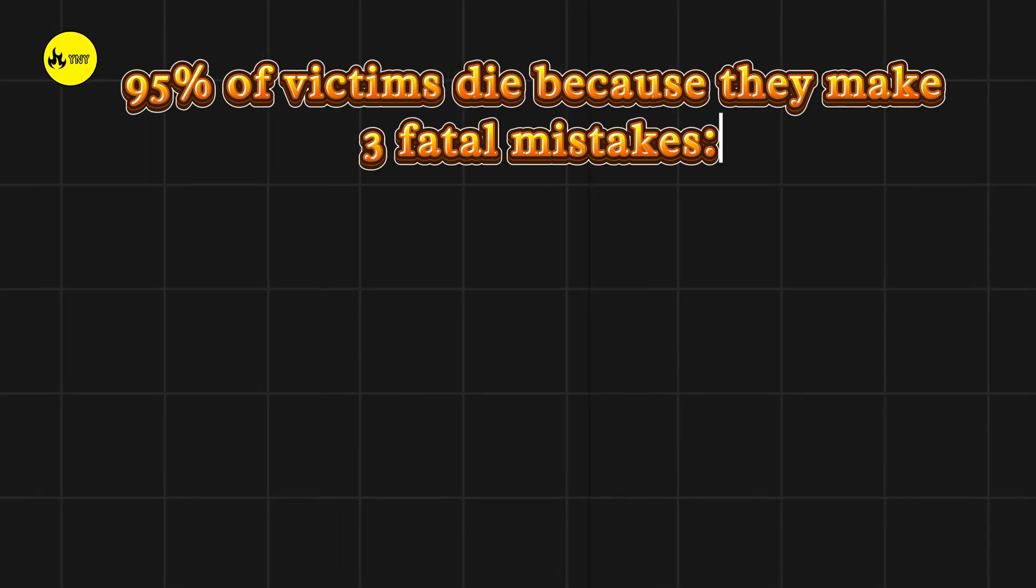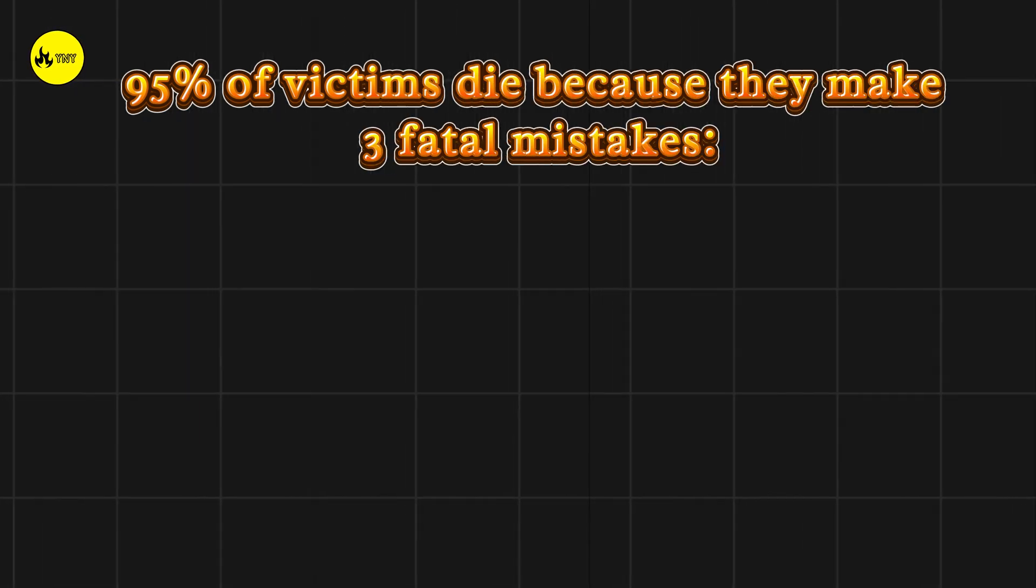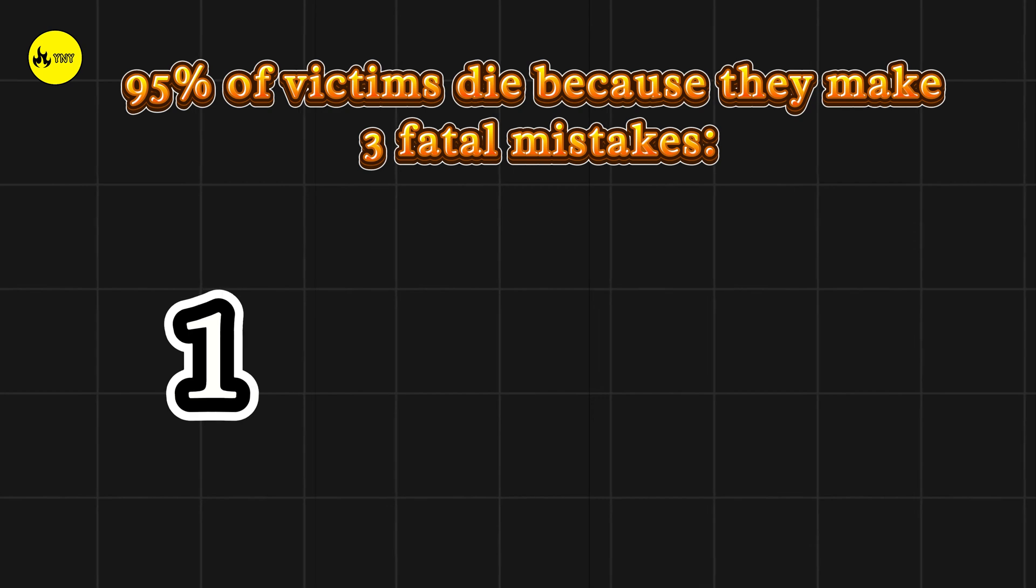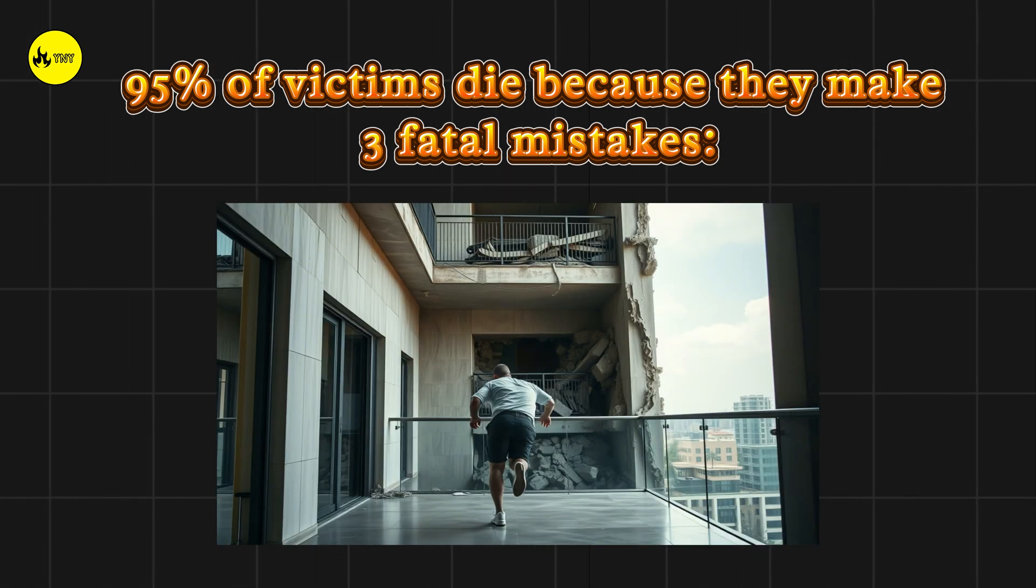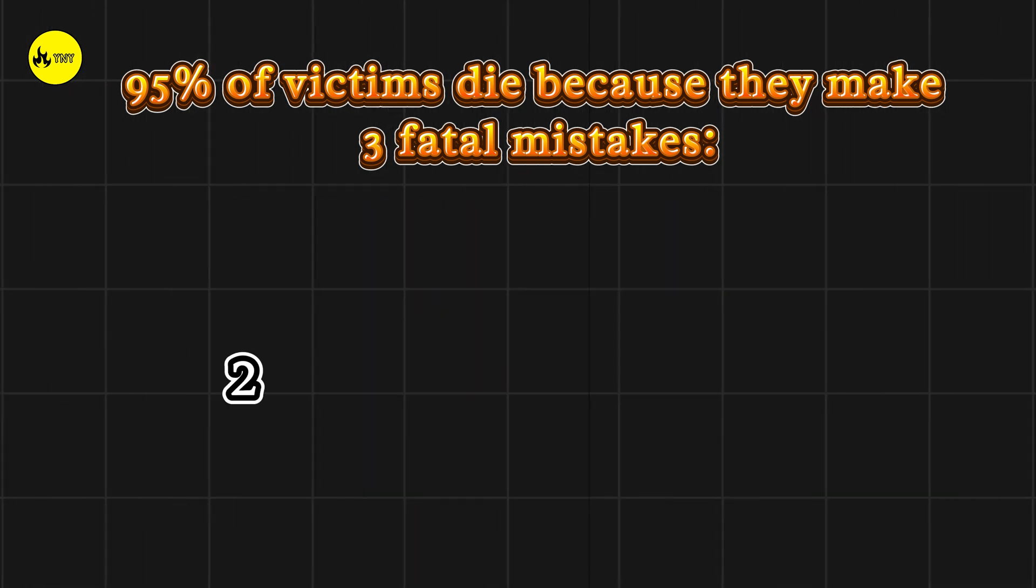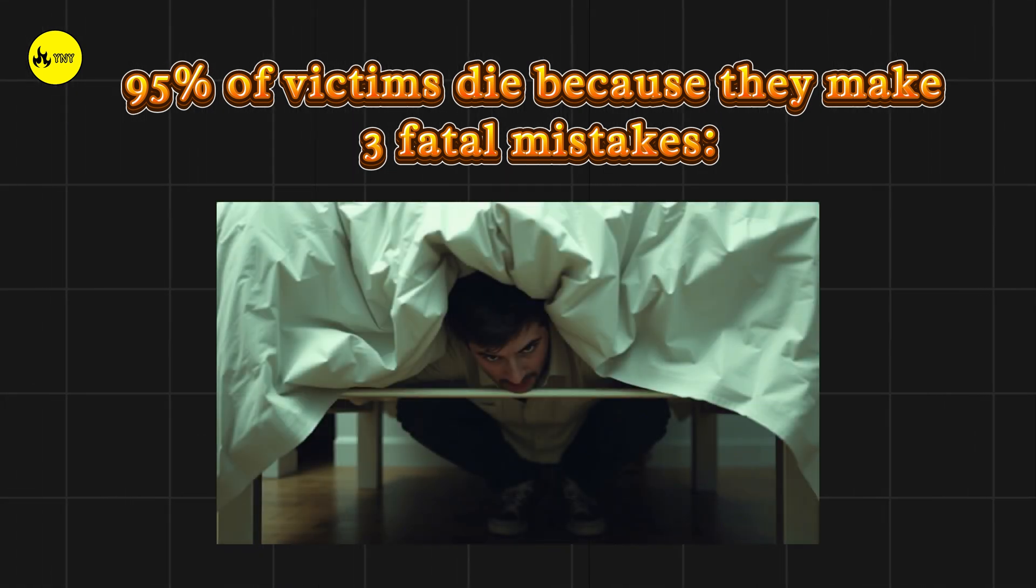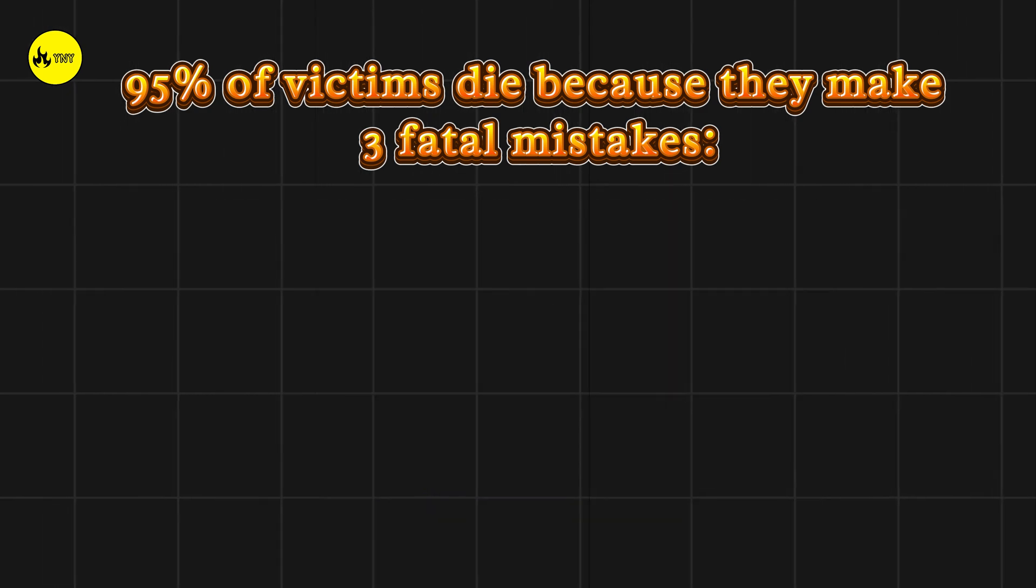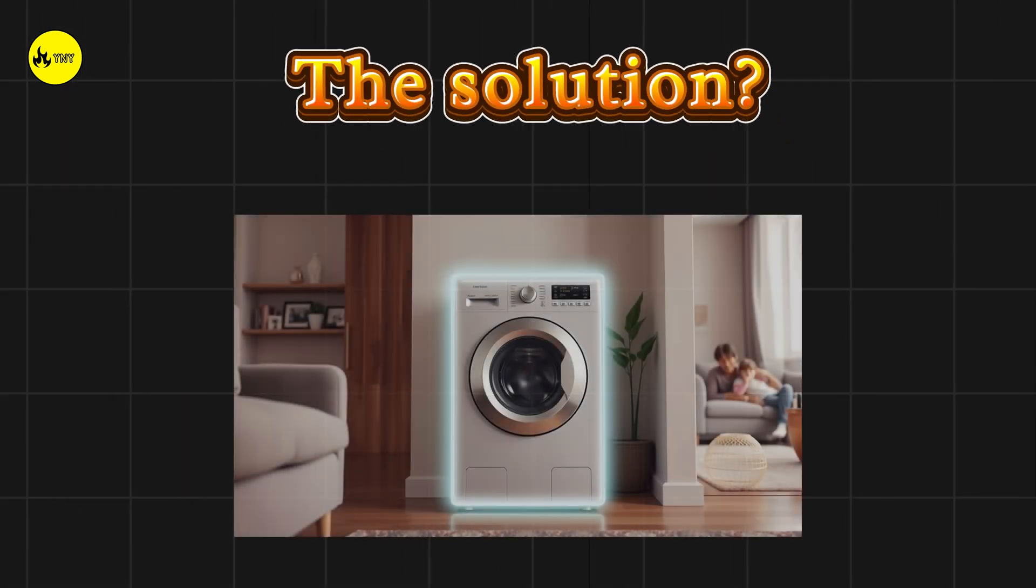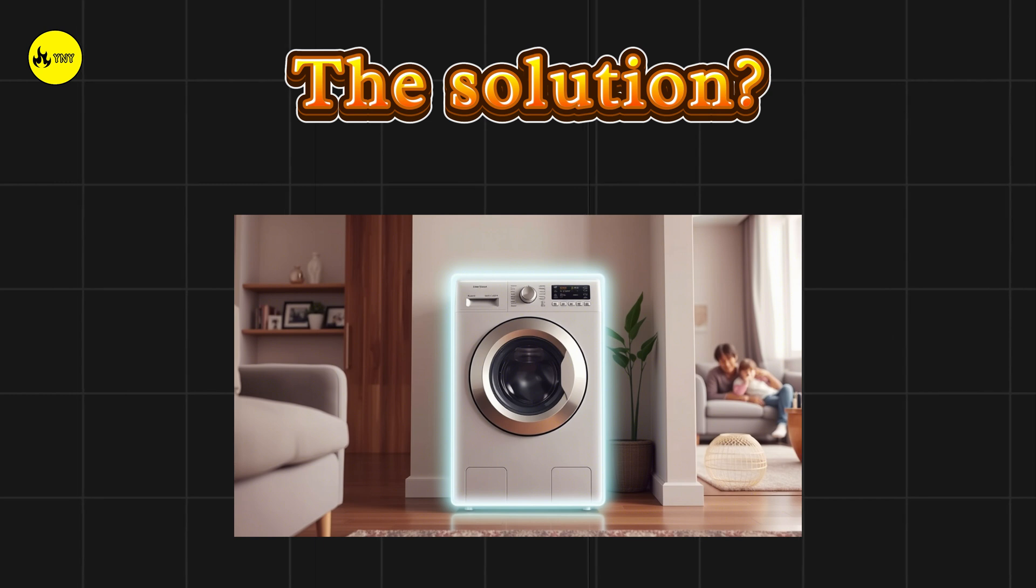95% of victims die because they make three fatal mistakes. One: fleeing to the balcony, the first thing to collapse. Two: lighting matches, gas leaks can explode. Three: hiding under the bed, you might be crushed into 20 centimeters of space. The solution? Hide next to a washing machine. Its heavy metal frame creates a survival void.